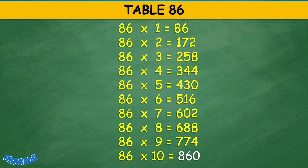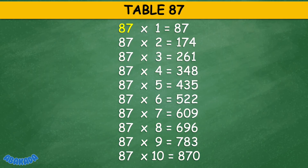Table 87: 87 times 1 equals 87, 87 times 2 equals 174, 87 times 3 equals 261, 87 times 4 equals 348, 87 times 10 equals 870.